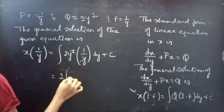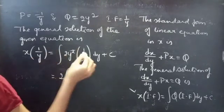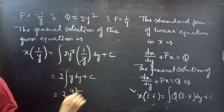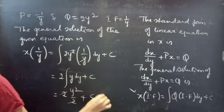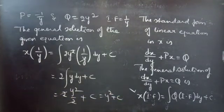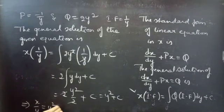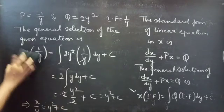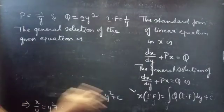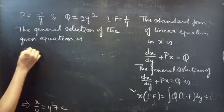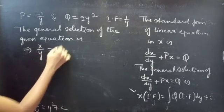One y cancels with the 1/y, leaving only y. So we have 2 · ∫ y dy = 2 · y²/2 = y². The 2 cancels and we get y² + c. Therefore, x · (1/y) = y² + c, which means x/y = y² + c.